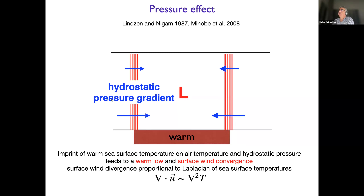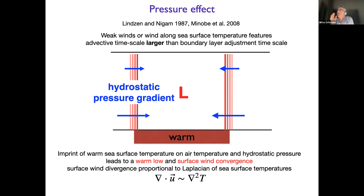We get a hydrostatic pressure gradient and a convergence of winds right over this warm sea surface temperature. This is classical Ekman dynamics. As was shown in original papers by Ekman and further developed by Minobe, you would expect that the divergence of the winds is associated with the Laplacian of sea surface temperatures. This is the situation where we have either weak winds, or winds that go along features of sea surface temperature, such that the air is completely adjusted. We expect this when the advective timescale is larger than the boundary layer adjustment timescale.